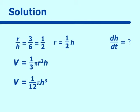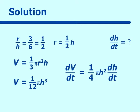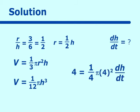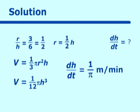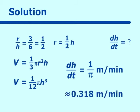We are looking for dh/dt, so we substitute dV/dt = 4 and h = 4: we get 4 = 1/4 π (4²) dh/dt. Solving for dh/dt, we get 1/π meters per minute. Evaluating that gives approximately 0.318 meters per minute.